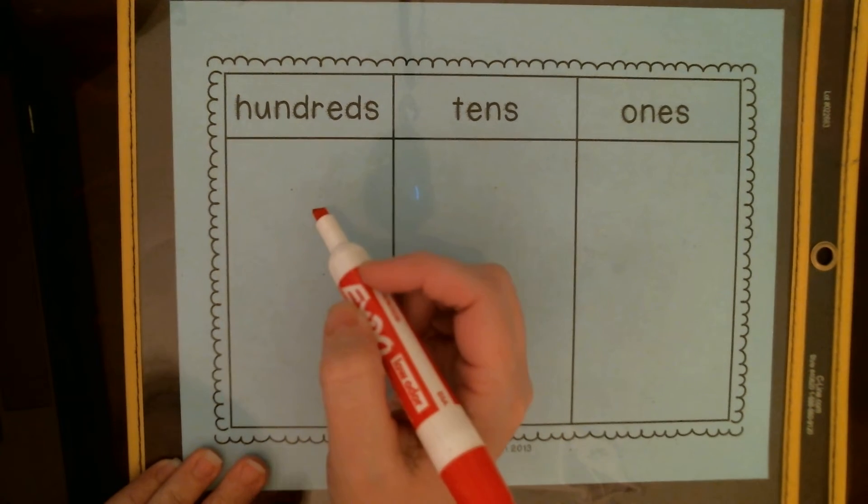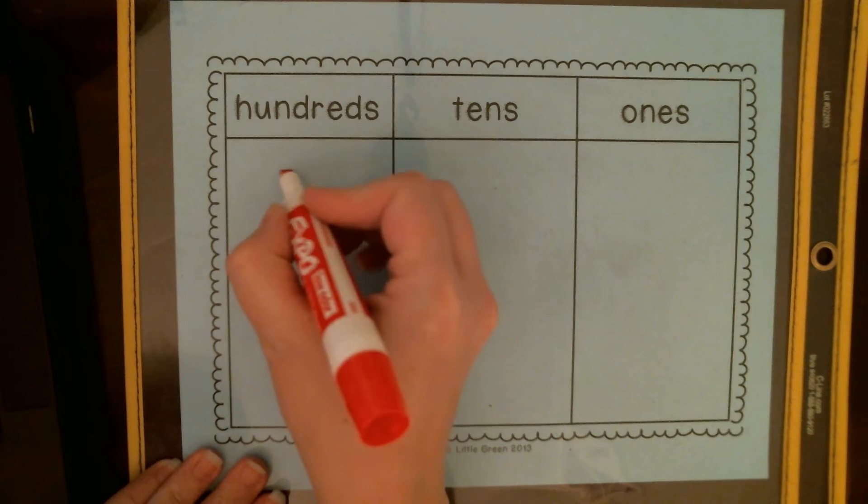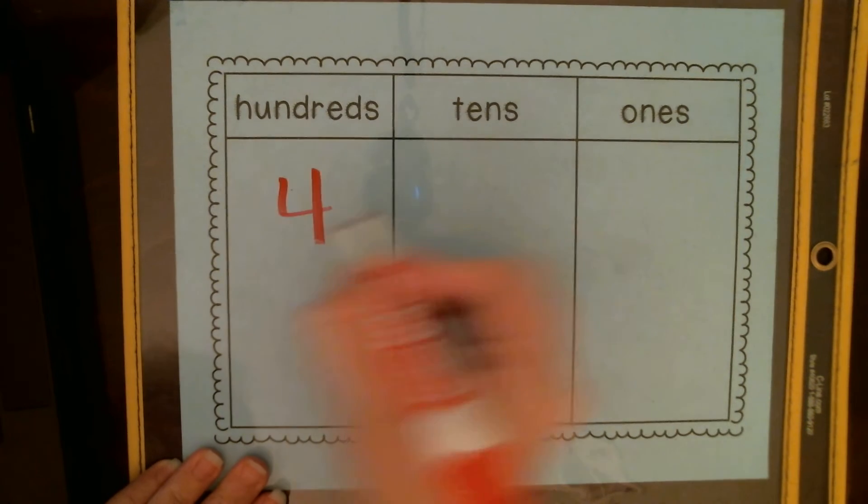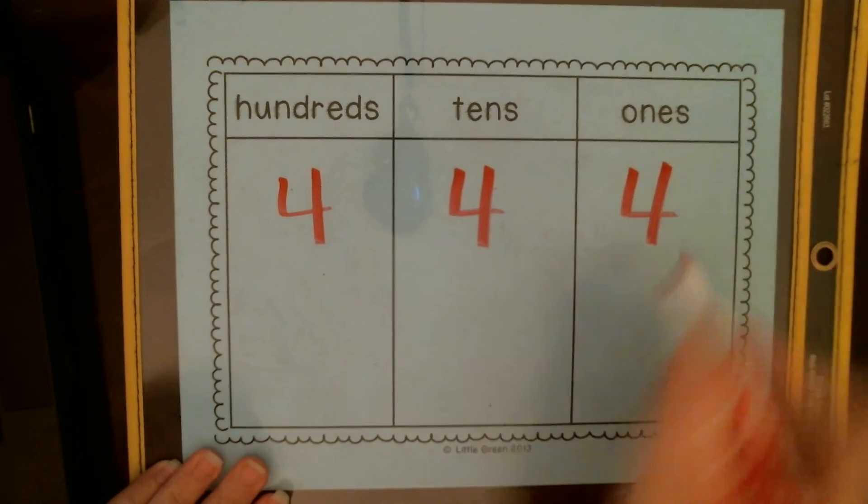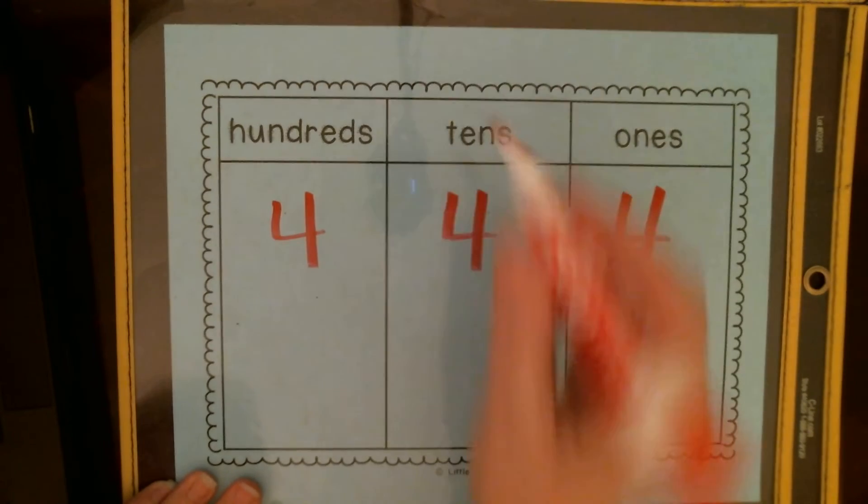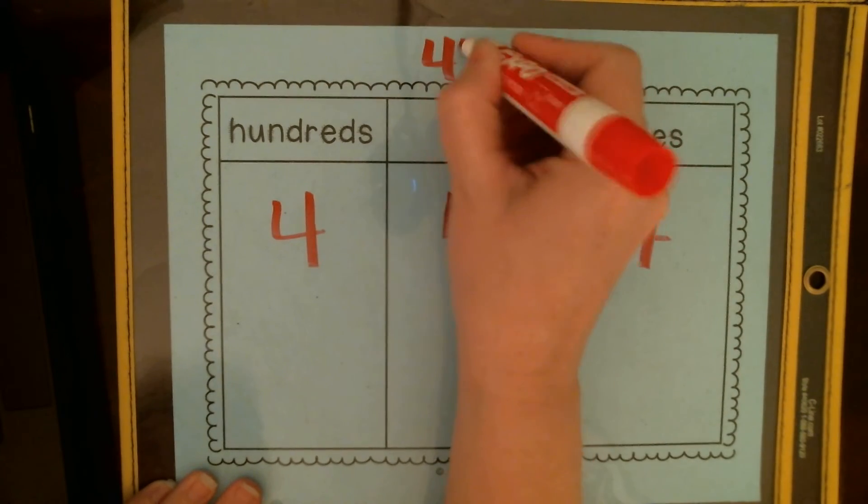Each digit in a three-digit number has a different value. Let's think about the number 444. Even though it's three numbers and they're all four.